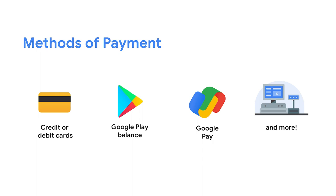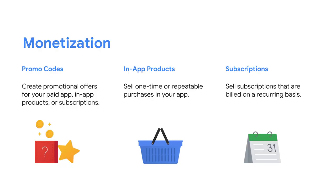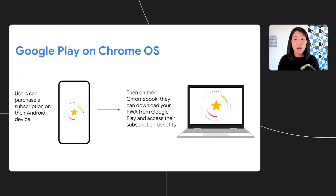Many Play Store users will already have their preferred payment methods set up, so they won't need to do additional work — they can start making purchases right away. Play Billing also provides an easy way for developers and merchants to manage promotional codes and offers. Additionally, it supports in-app products like one-time and repeatable purchases, as well as subscriptions. We'll go into more detail about this later on. Lastly, the Play Store is also available on Chromebooks.